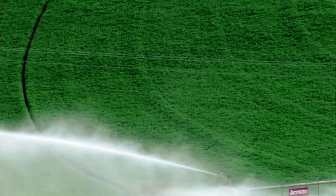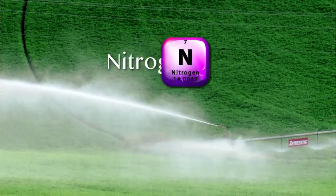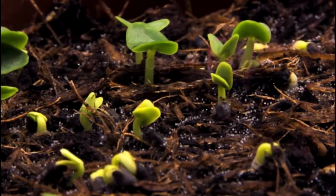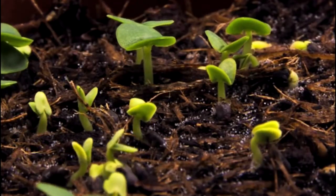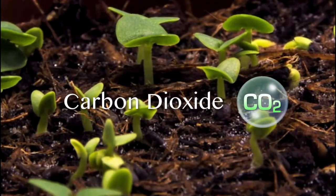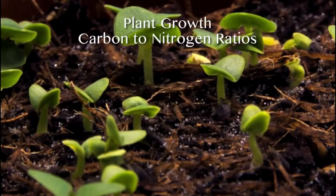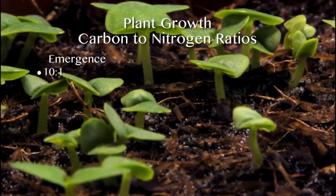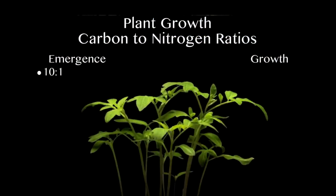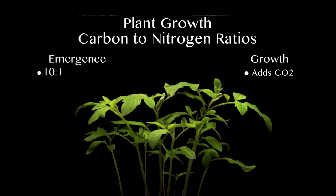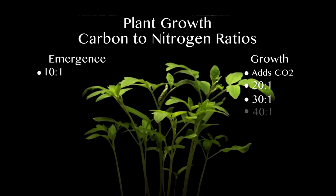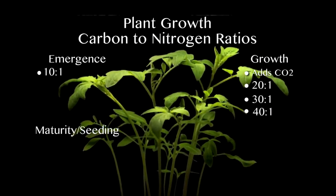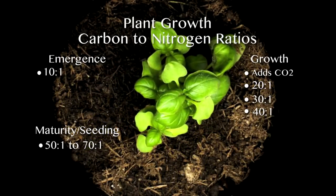Many farmers and producers are told that nitrogen is the most important mineral element in our fertility program, but it's not. Actually the most important component of plant growth is CO2, or carbon dioxide. As you look at plant growth and structure over time, a plant may emerge with 10 carbons to 1 nitrogen. As it goes through its vegetation stages that carbon increases up to 20 to 1, 30 to 1, and even 40 to 1. By the time these plants get into reproduction and maturity we're reaching 50 to 1, 70 to 1, even 100 to 1 carbons to 1 nitrogen.